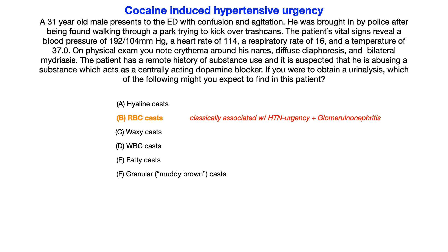Let's go through the other cast types and their associations for test day. Hyaline casts are actually a nonspecific finding and can even be present in normal concentrated urine. Because of that, they're rarely going to be the answer on USMLE or COMLEX — those exams will give you a specific association with a disease or process and make you reason through which cast to expect.